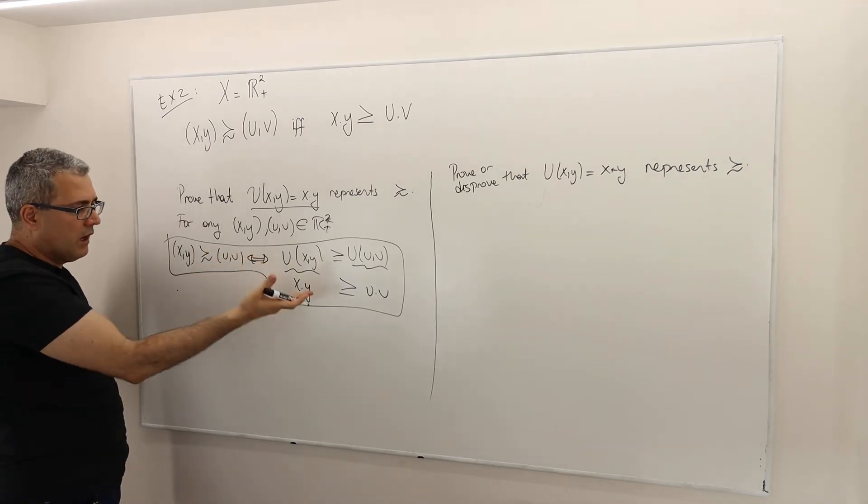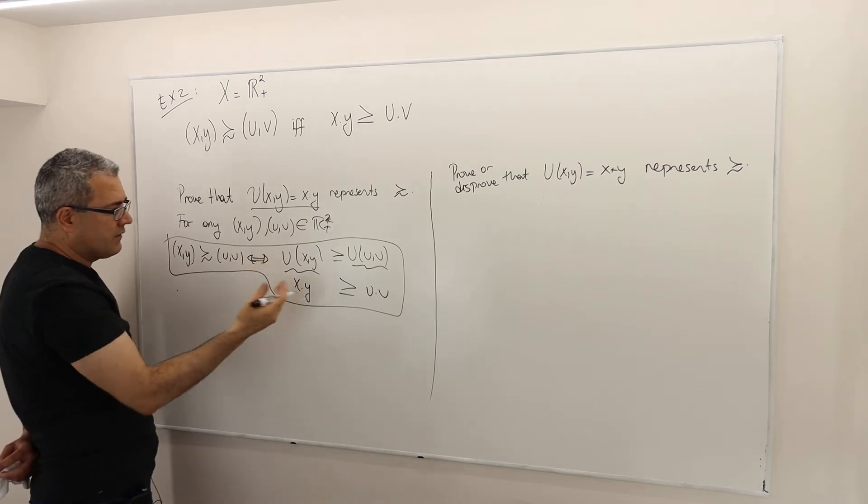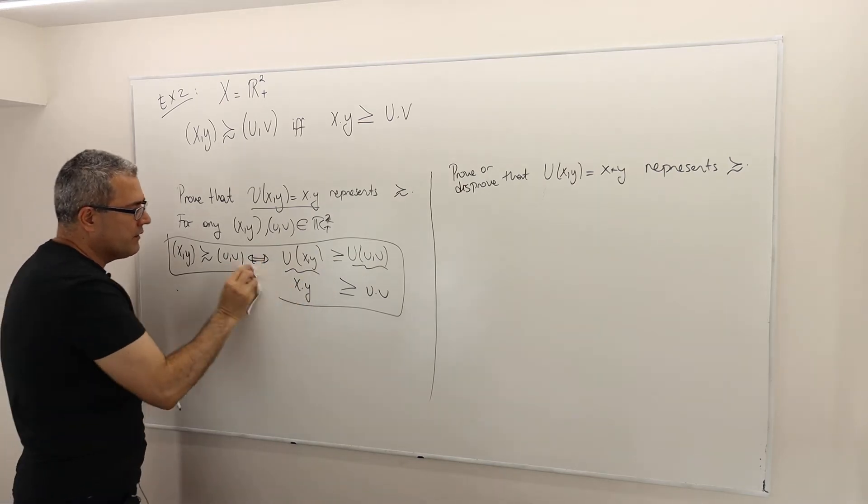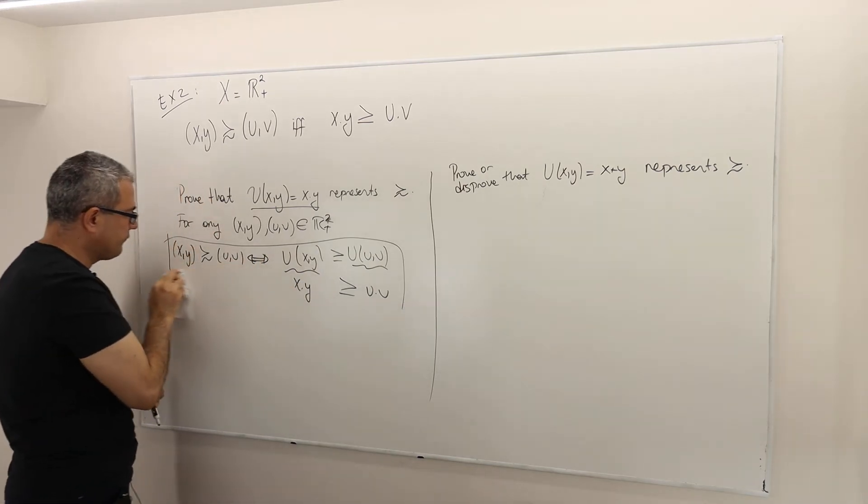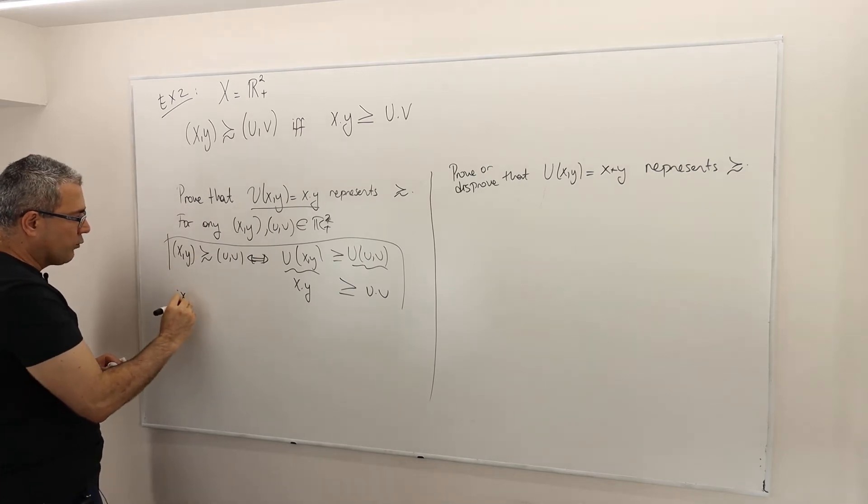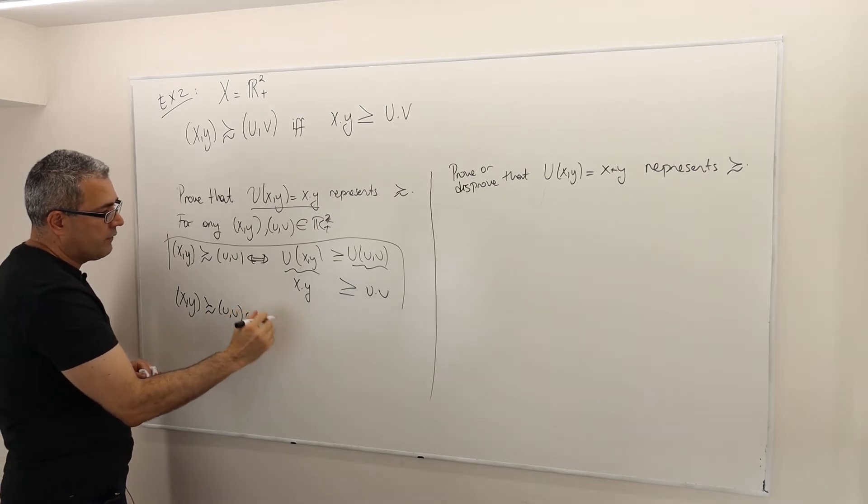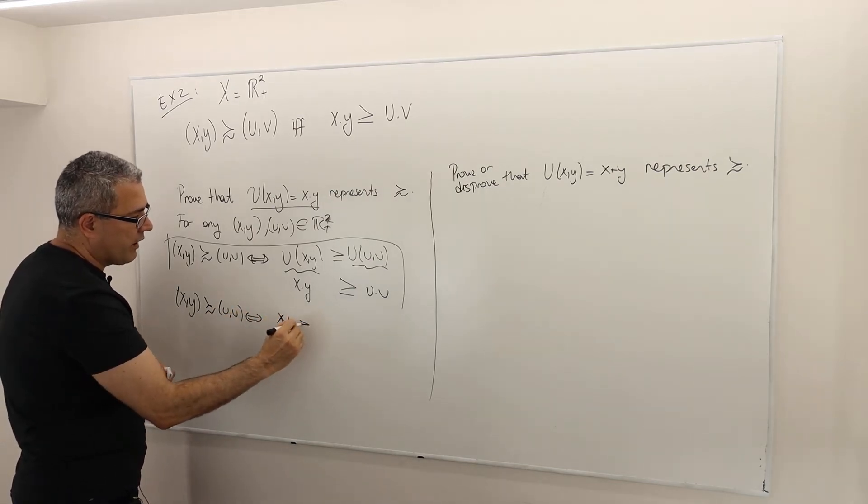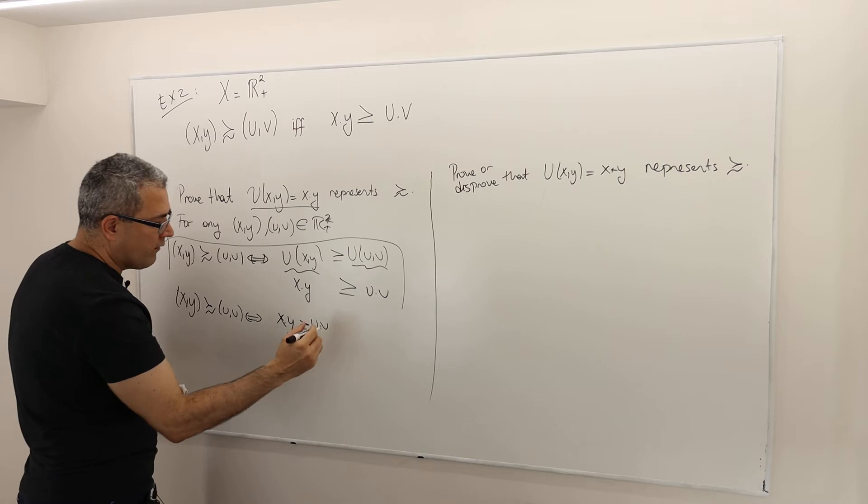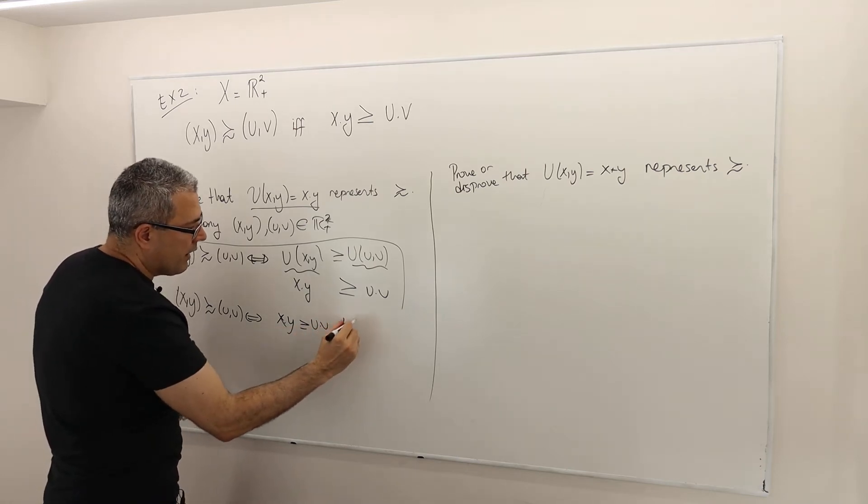So we just proved it. I mean, you don't really need to say anything else. All you need to say is maybe let me be a bit more formal, one more step: XY is at least as good as UV if and only if X times Y greater than or equal to UV by the definition of the utility function.